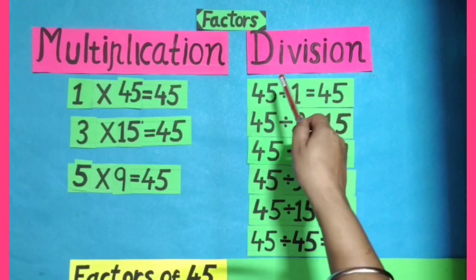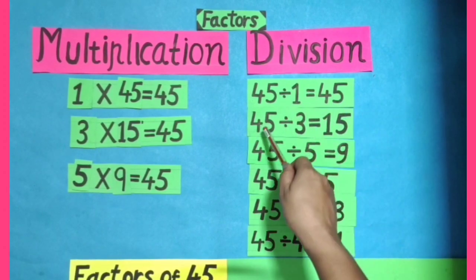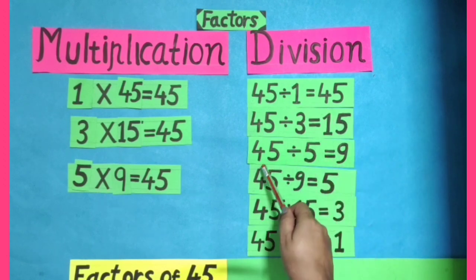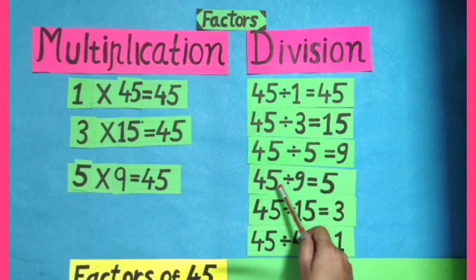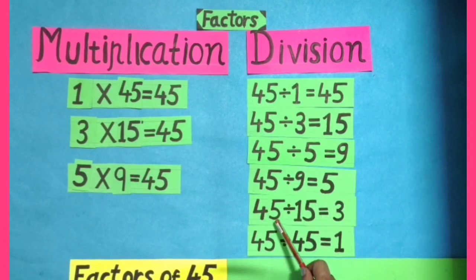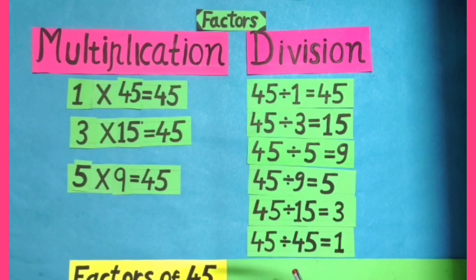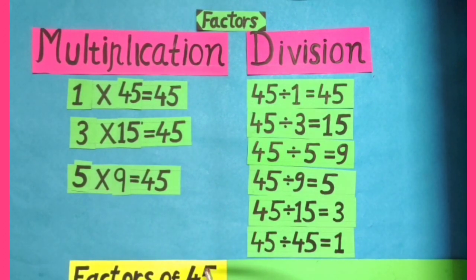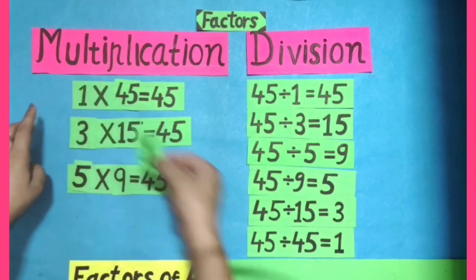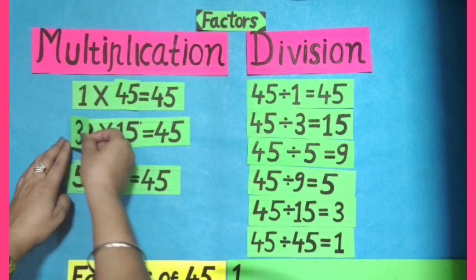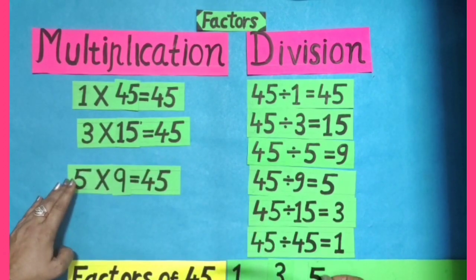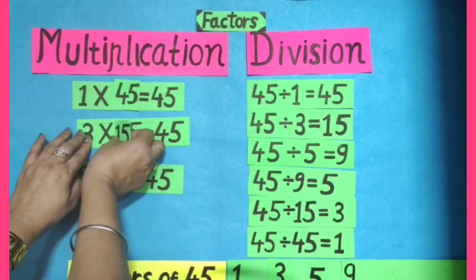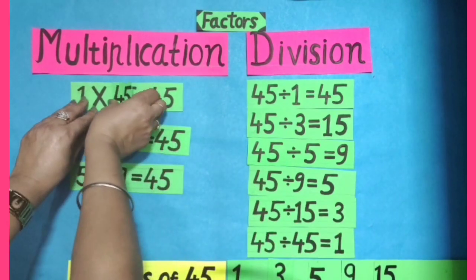In division method, when 45 is divided by 1, we get 45. 45 divided by 3 equals 15. 45 divided by 5 equals 9. 45 divided by 9 equals 5. 45 divided by 15 equals 3. 45 divided by 45 equals 1. The digits which divide the number 45 completely will be the factors of 45. By using these two methods, we get factors of 45: 1, 3, 5, 9, 15, and 45.